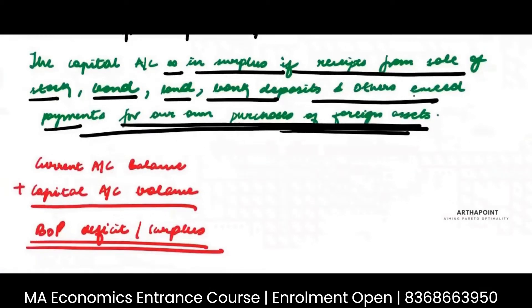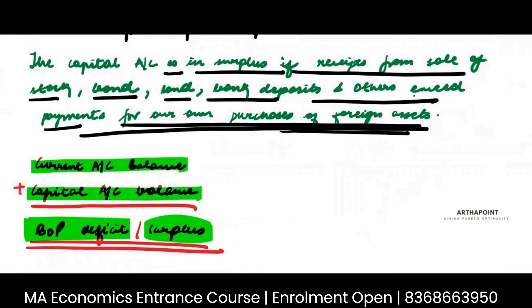So let's see this. You have a current account balance. You have a capital account balance. Both of them together can either give you a negative balance or can give you a positive balance.